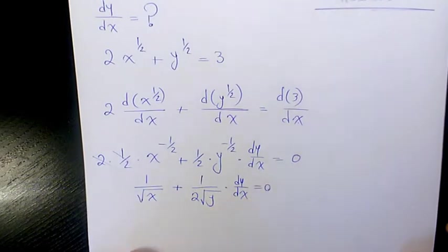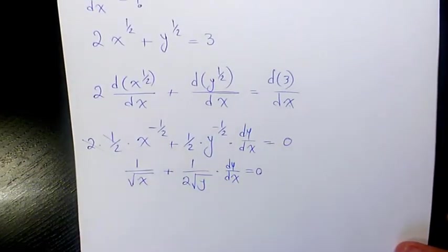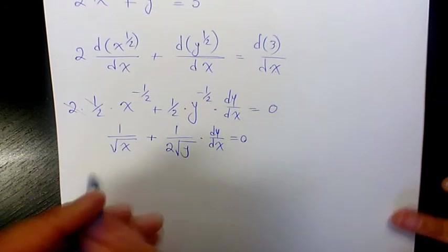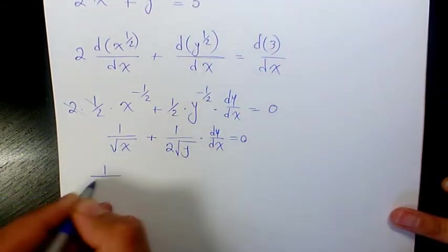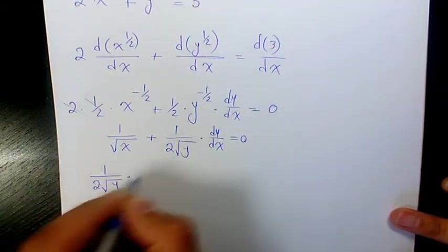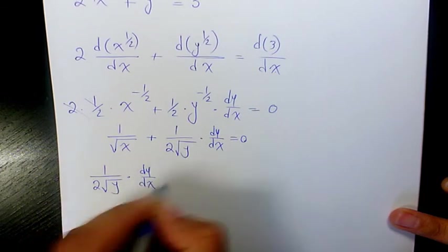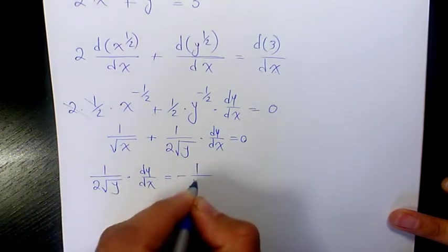Then we can say 1/(2√y) times dy/dx equals to negative 1/√x.